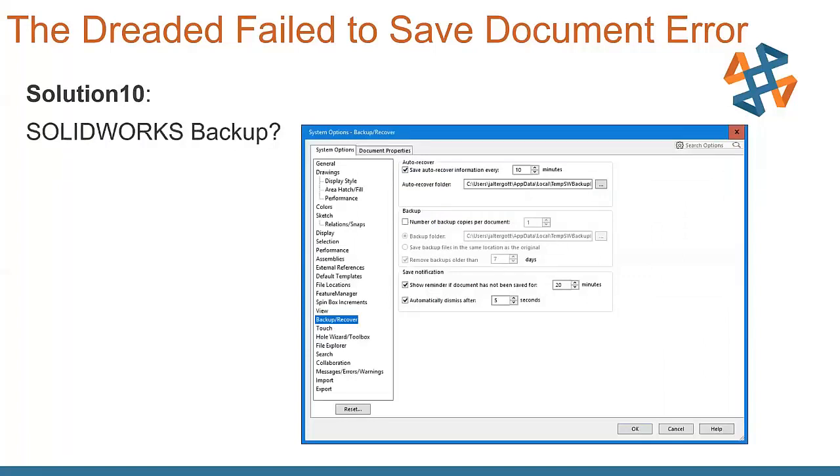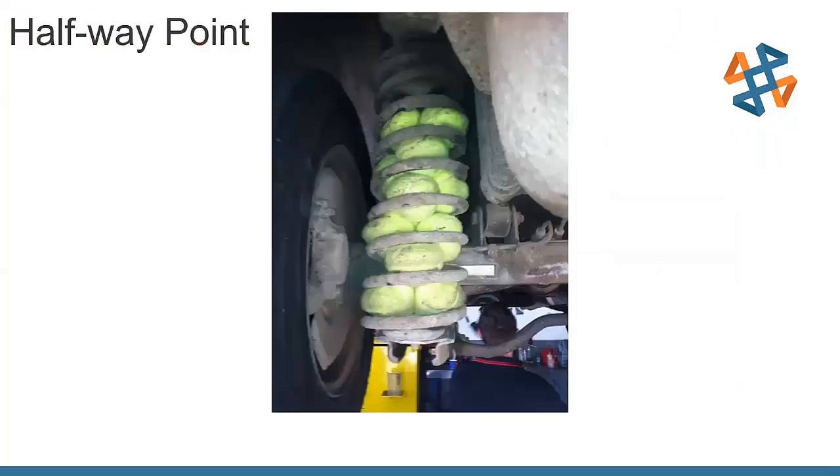Last but not least, we can always resort to SolidWorks Backup here. Make sure you turn on the auto recover, check the location that's at, confirm the file is there and you have a decent copy of it before you close out and discard any changes, obviously. But SolidWorks Backup can be a good option there. I do see we have a question that came in. This is around about the halfway point, and we're doing pretty decent on time here so far.